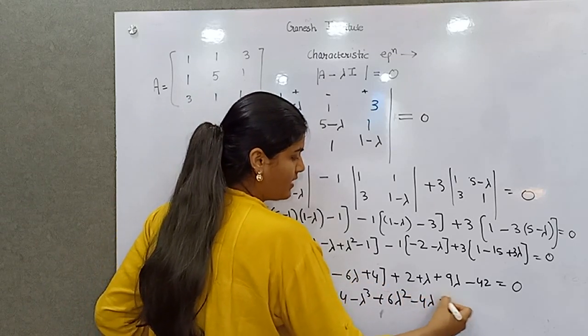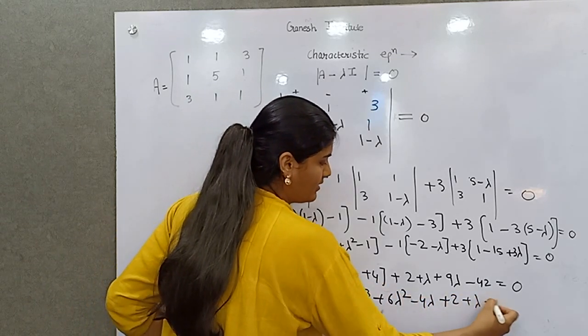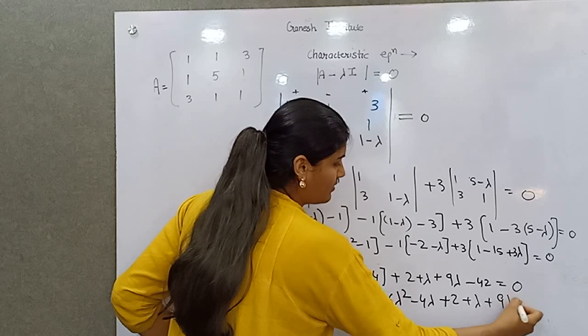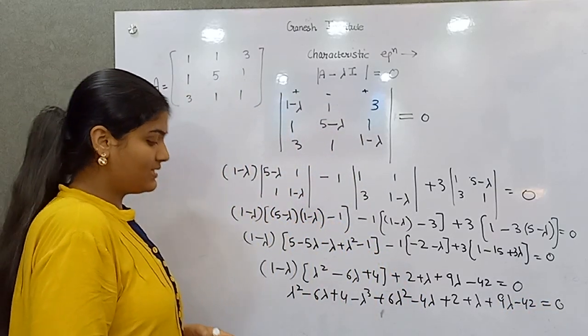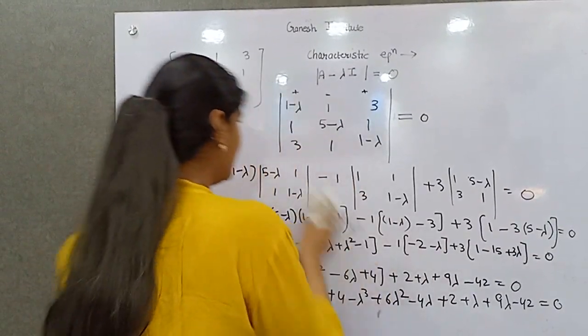Plus 2 plus lambda plus 9 lambda minus 42 equals 0.